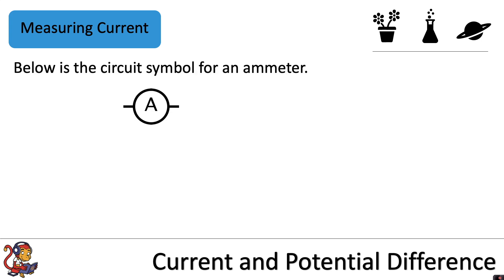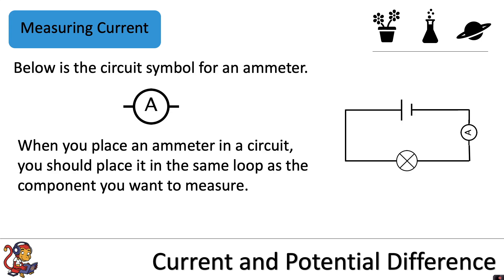Below is the circuit symbol for an ammeter. When you place an ammeter in a circuit you should place it in the same loop as the component you want to measure.